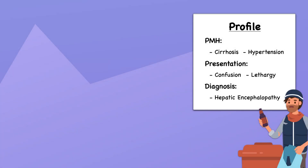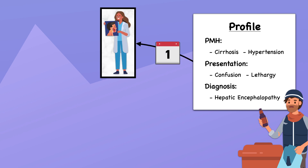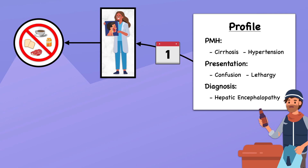Frank is a 64-year-old male with a past medical history of alcoholic cirrhosis who was admitted to the hospital with confusion and lethargy secondary to hepatic encephalopathy. He was seen by a speech-language pathologist on hospital day one, but he couldn't focus long enough to participate in the assessment, and the SLP recommended against oral feeding until his mental status improved.